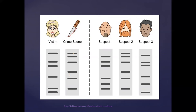Looking at the crime scene sample, the first bar matches exactly with suspect two, as does the second bar, the third bar in the same line, the fourth bar at the same position and thickness, and the sixth bar. In a question paper, you would use a ruler to verify that each bar is in the correct position. In this case, the investigator would have proven that the sample found at the crime scene came from suspect number two.